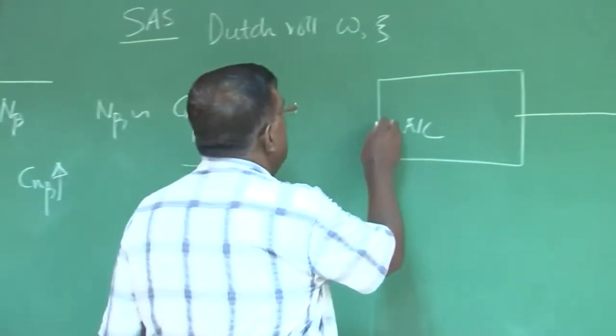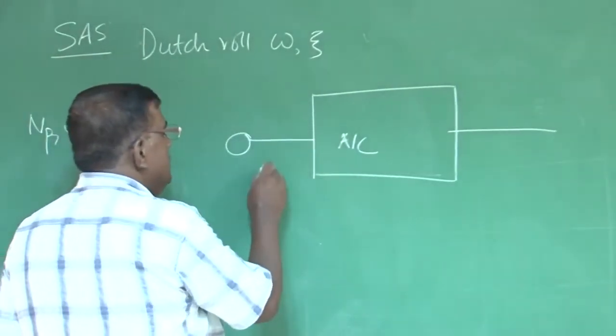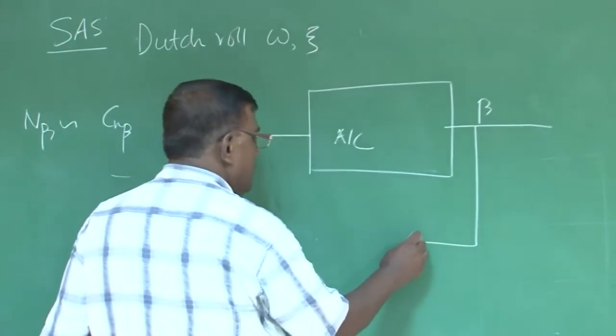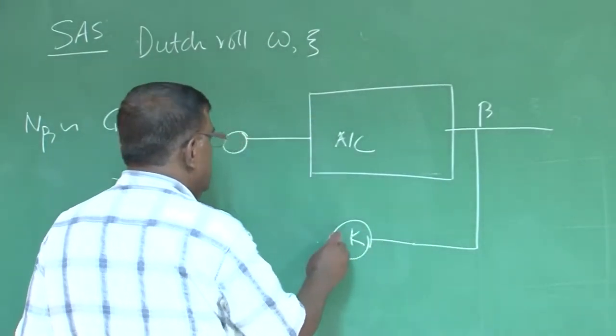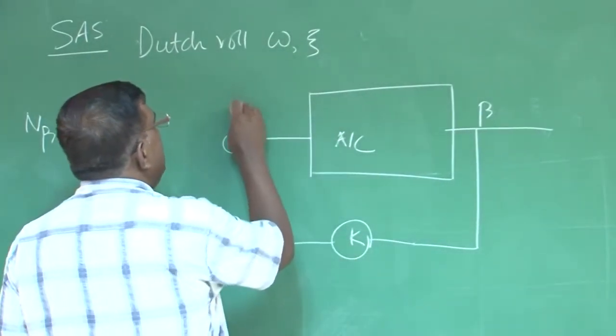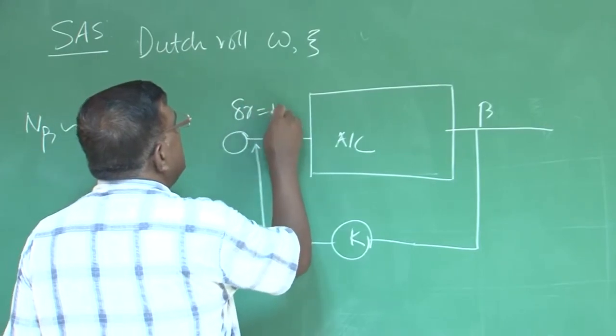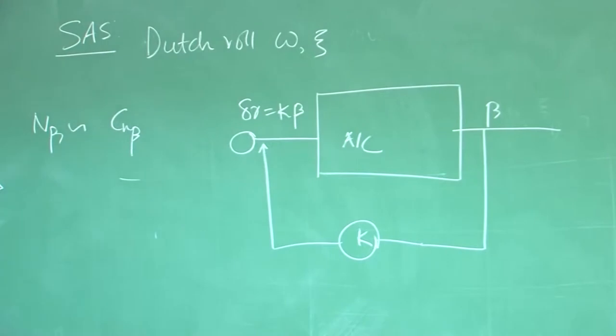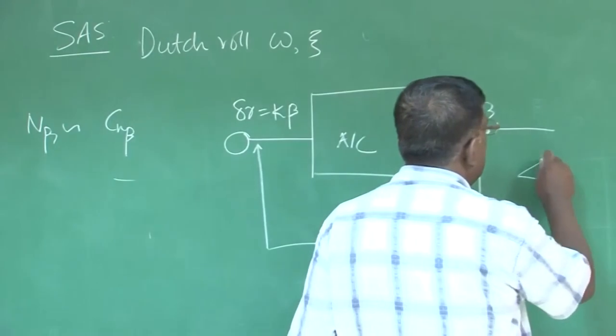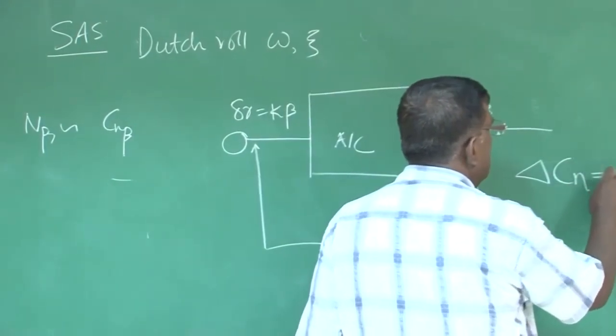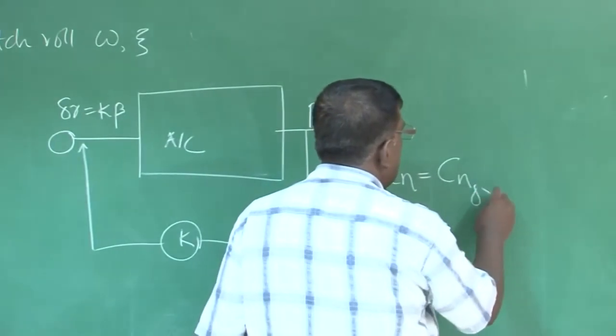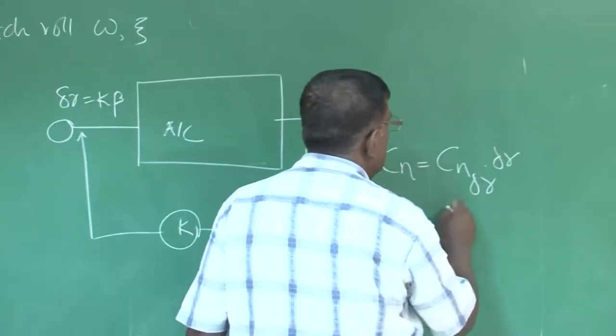So, let us say this is, I am tapping beta, gain, I am multiplying and I am deflecting delta r proportional to beta. What is happening by doing this? I am adding delta c n yawing moment, that will be c n delta r into delta r. So, that